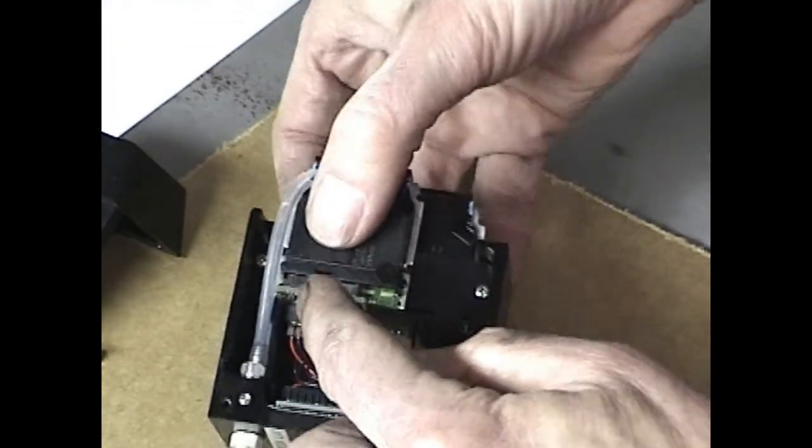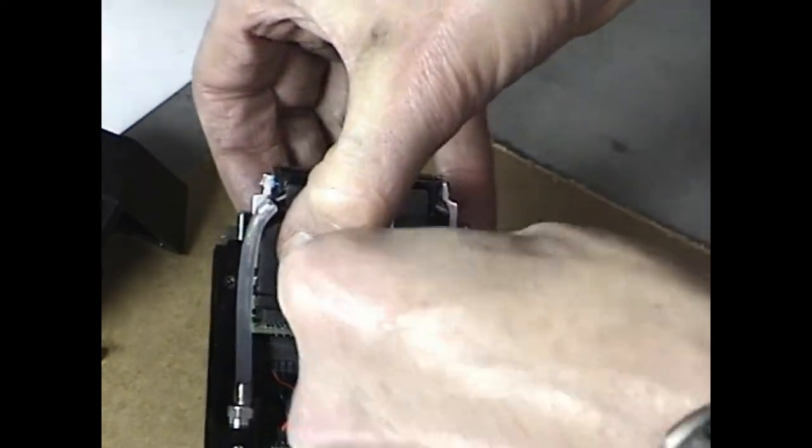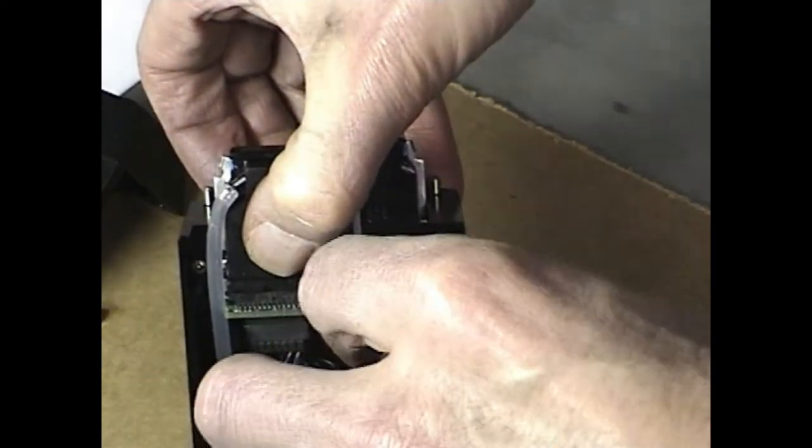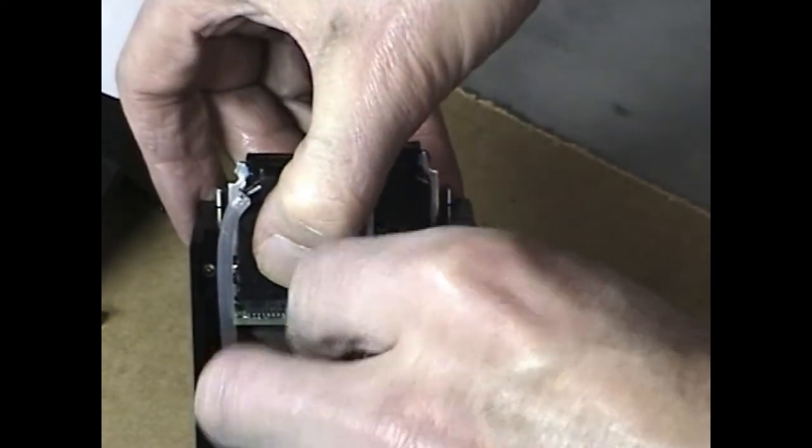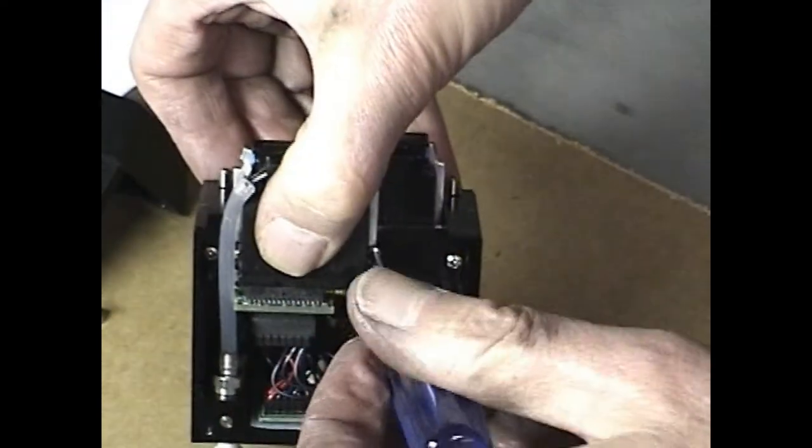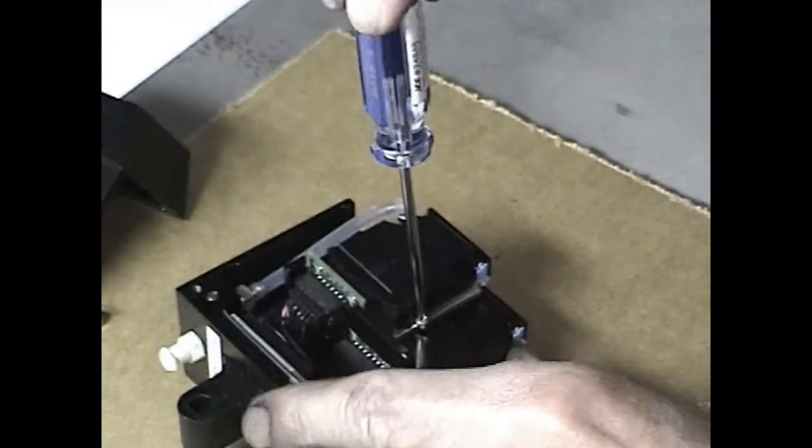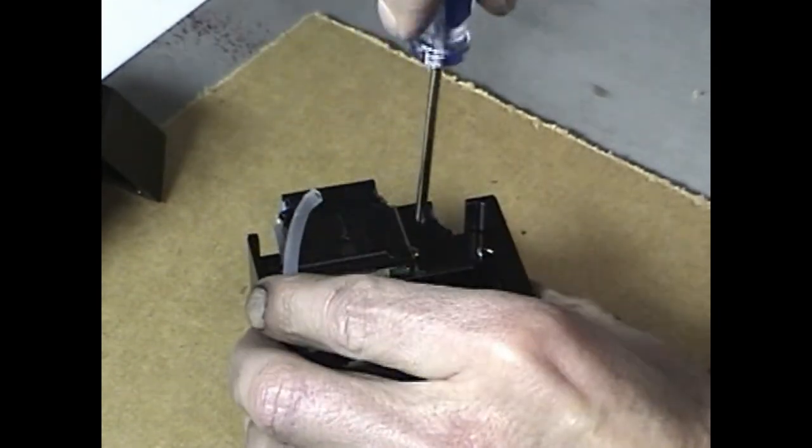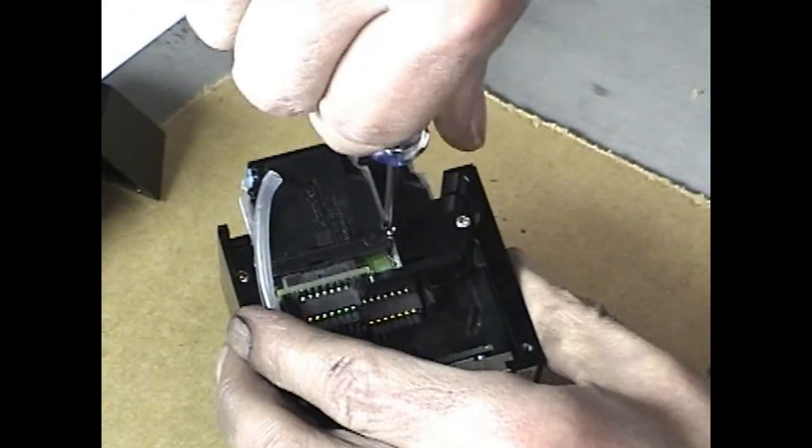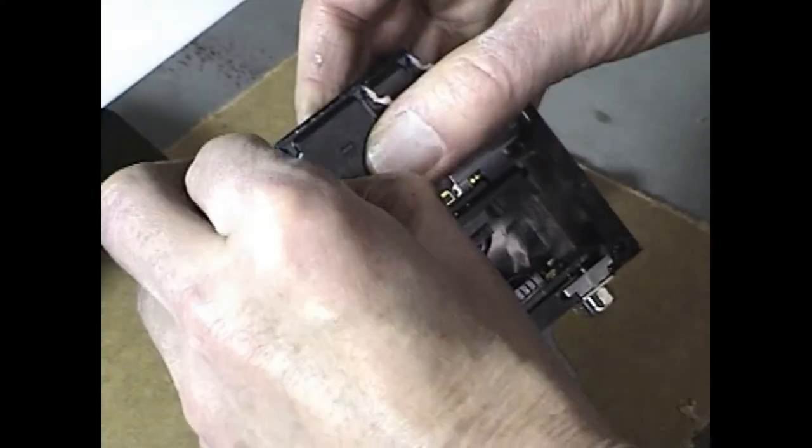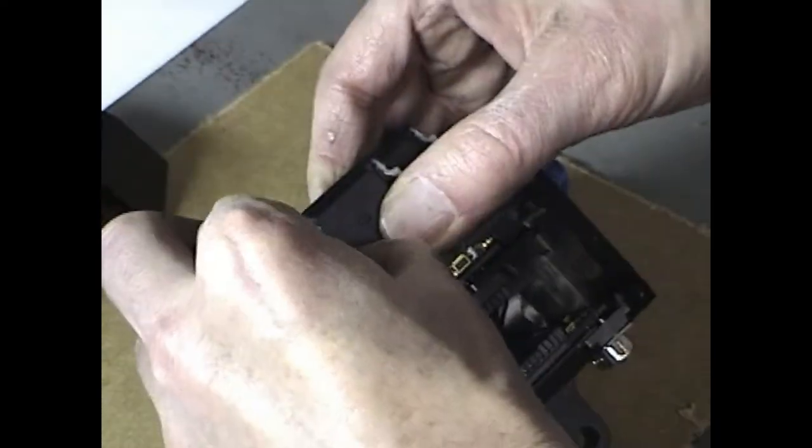Then simply connect the electrical connections to the back of the print engine and position the new print engine in the print head. Replace the small mounting screws that hold the print engine in position. Now, reattach the ink line to the print engine.